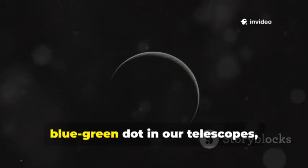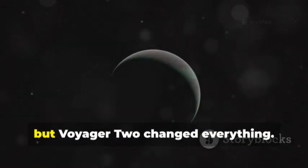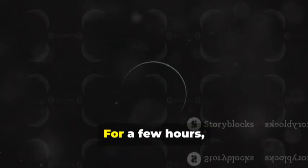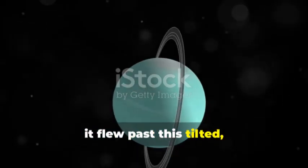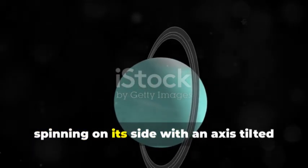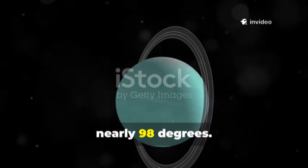Uranus was a faint blue-green dot in our telescopes, but Voyager 2 changed everything. For a few hours it flew past this tilted mysterious world, spinning on its side with an axis tilted nearly 98 degrees.